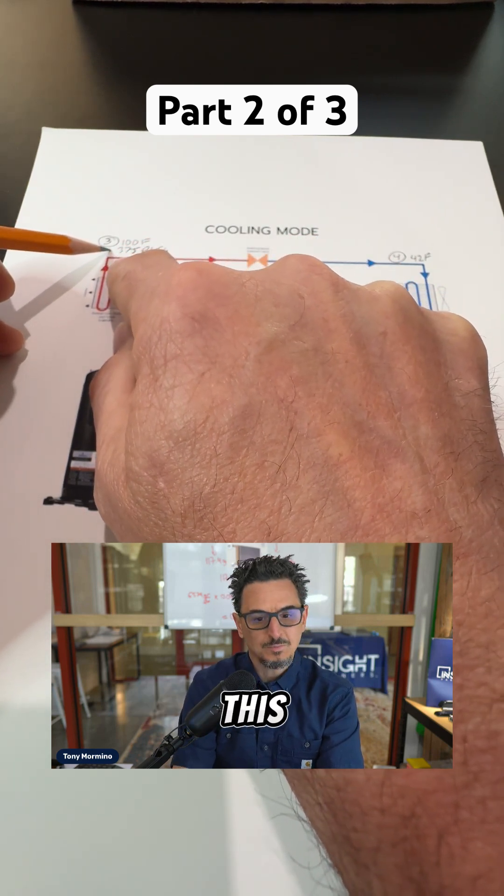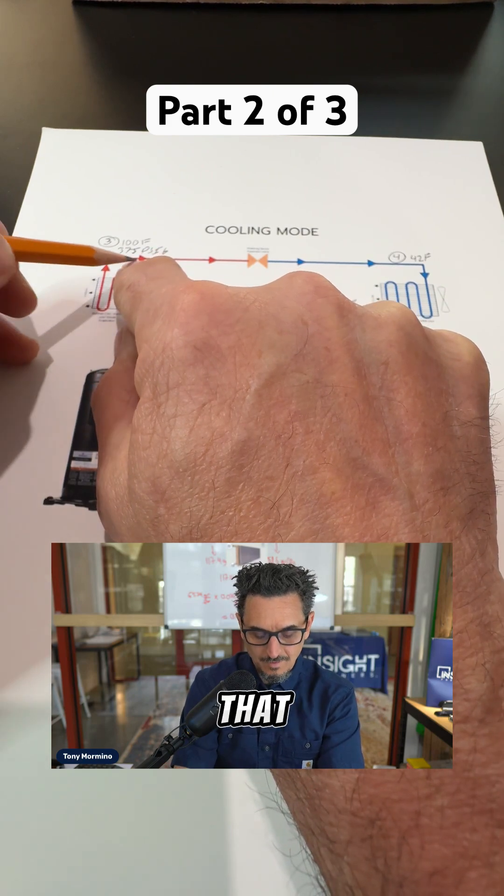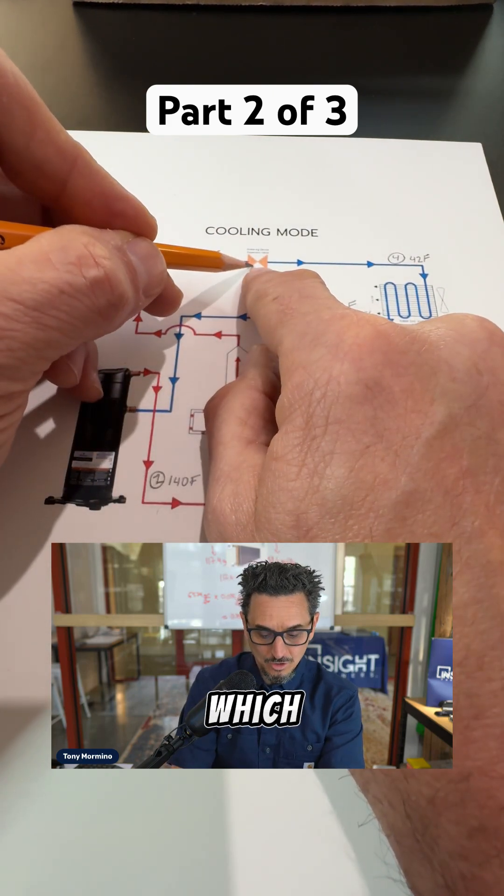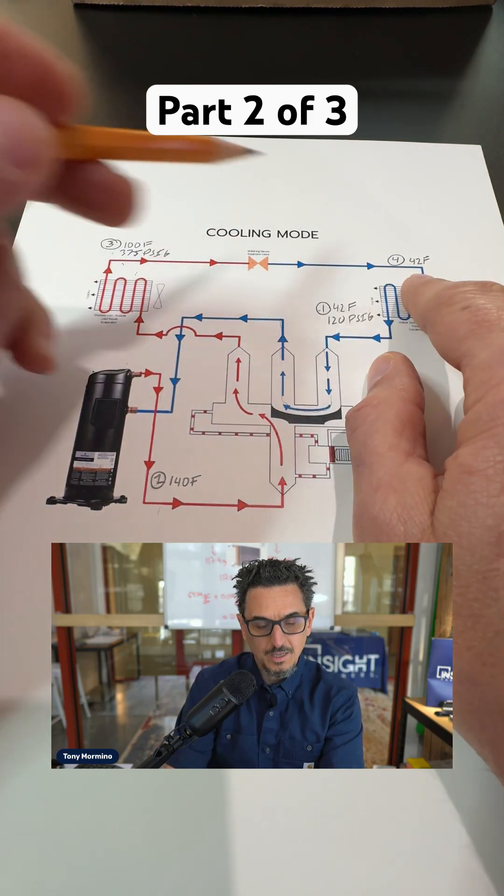The high side of this particular type of system is about 375 PSI. Of course, that varies. Then we go through our pressure drop device, which lowers the pressure and temperature of the refrigerant down to about 42 degrees.